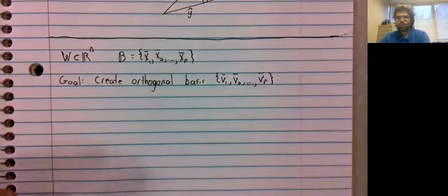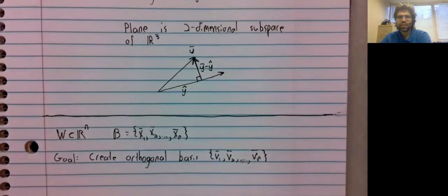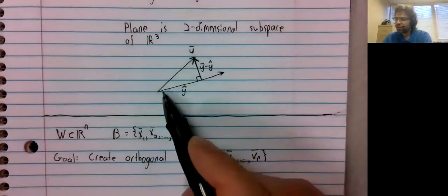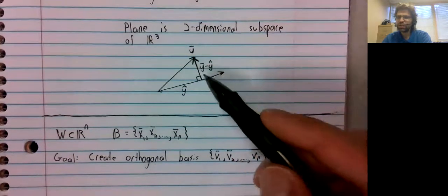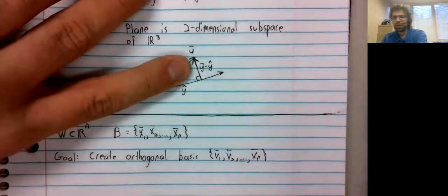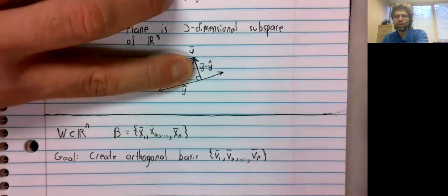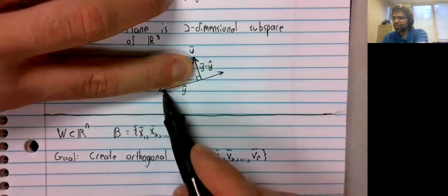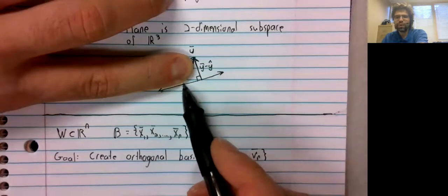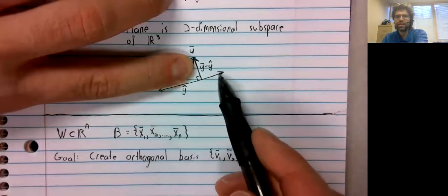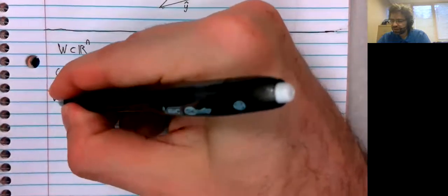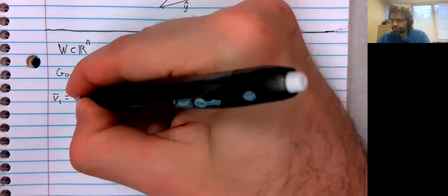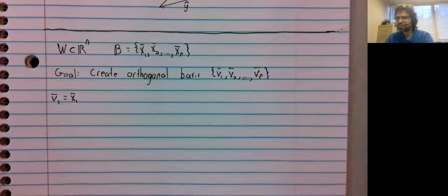And we're going to proceed, basically, as we outlined here. We started with two vectors, a basis, we did a projection, and we got an orthogonal basis. And one of the vectors in the original basis is still in the orthogonal basis. V1 will simply equal x1.